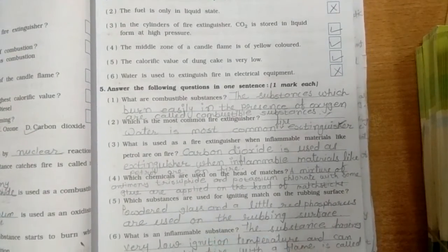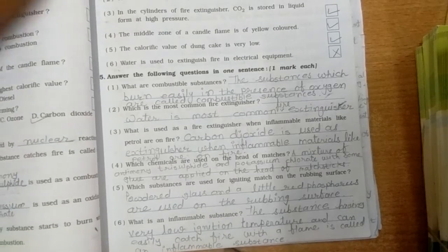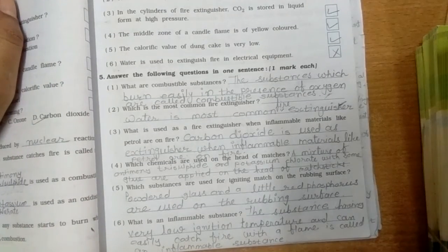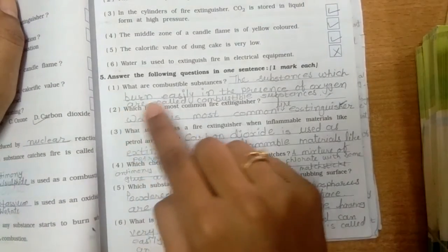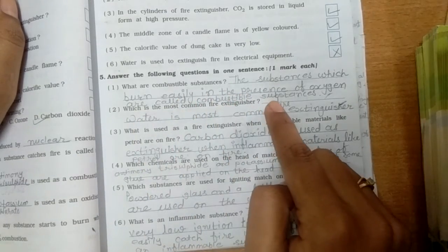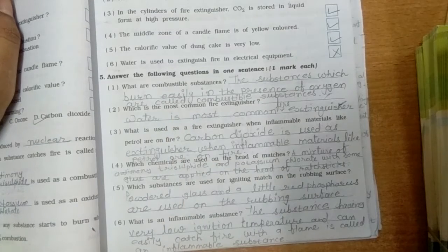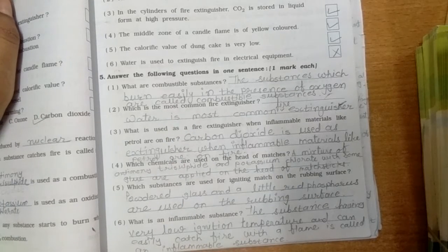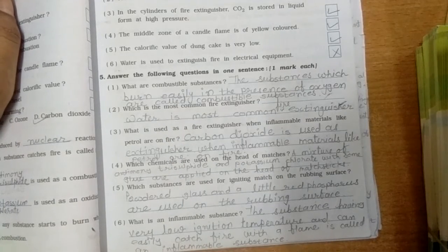Now, question number 5. Answer the following question in one sentence. First, what are combustible substances? So, the substances which burn easily in the presence of oxygen are called combustible substances. Second, which is the most common fire extinguisher? Water is the most common fire extinguisher.